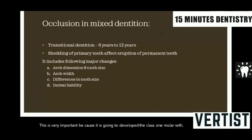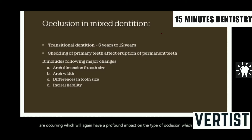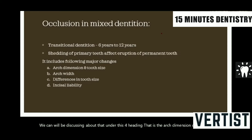Next is how the occlusion would be in the mixed dentition. The mixed dentition, also referred to as the transitional dentition, usually occurs between six to twenty-five years of age. In the mixed dentition, there are a few very important changes occurring which will have a profound impact on the type of occlusion developing in the permanent dentition. We will be discussing these under the headings: changes in arch dimension, tooth sizes, increase in arch width, differences between primary and erupting permanent teeth, and lastly the incisal liability.